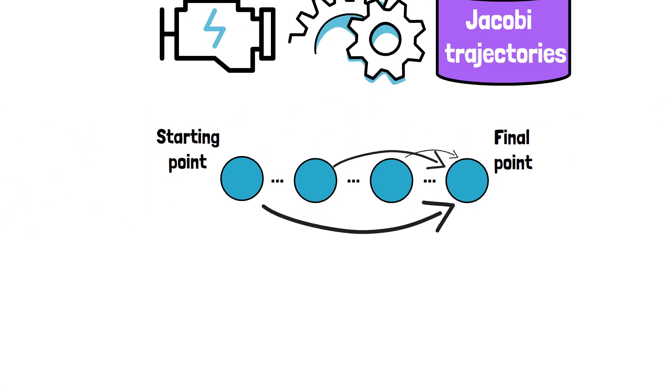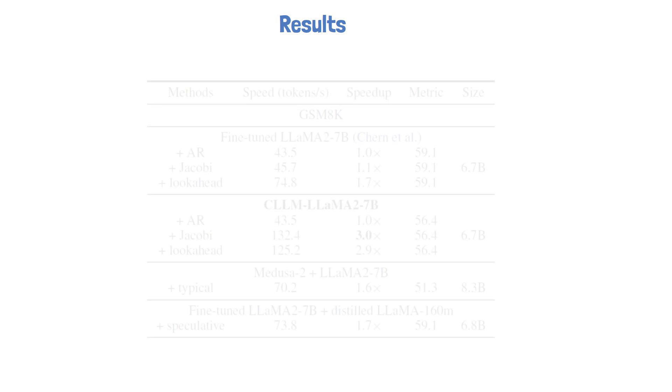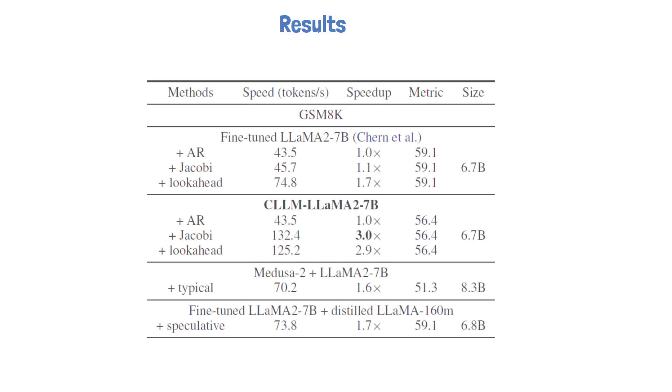Let's now also take a look at a quantitative comparison. In the following table from the paper we see a comparison over the metadataset GSM-8K. In the first row we have a standard LLM we compared to. By just using Jacobi with standard LLM we see there is no significant speedup. We did not talk about lookahead in this video, but this is another improvement that is using Jacobi decoding. In this case it achieves a speedup of 1.7. When looking at the CLLM results we see it is 3 times faster, and we pay a bit in performance, which is 56.4 compared to 59.1 before.